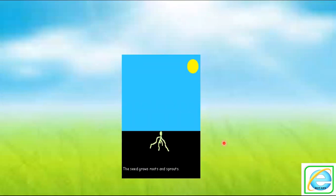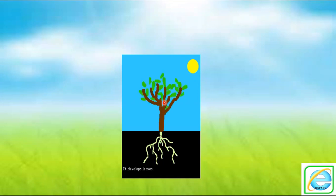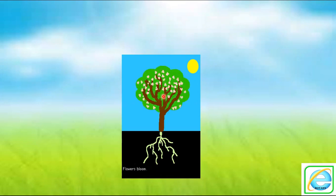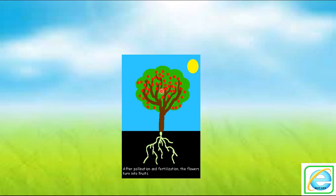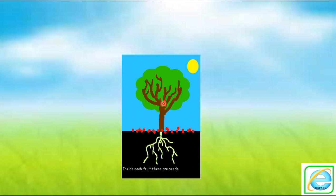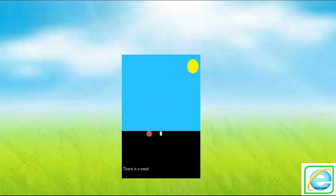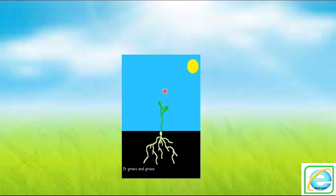Now look at this video again. What happened? The seed grows, roots get sprouted, it grows and grows. After the growth, it develops leaves, formation of flowers, flowers get bloomed. After then, fruit formation, pollination occurs, and the fruits fall down. So seeds again fall on the floor.